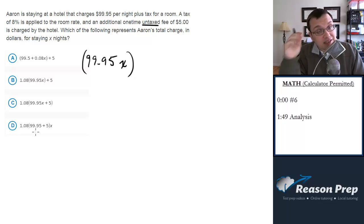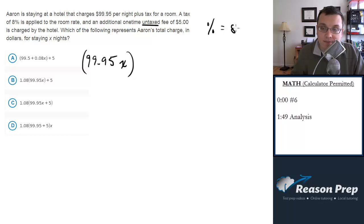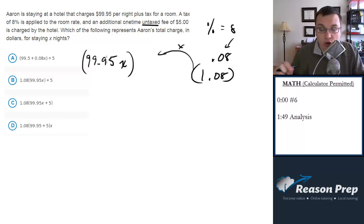Then there's going to be an 8% tax applied to that room rate. So how do we represent that? Well, the easiest way is you take your percent, which is 8, you make it to a decimal, so this becomes 0.08, and then you add that to 1. And you take this and you multiply it by the thing you're increasing by 8%, and that will increase it by 8% for you. So a useful trick, definitely want to know that. So when we apply the tax, it's going to be 1.08 times 99.95X.